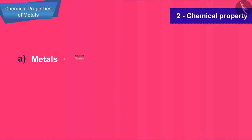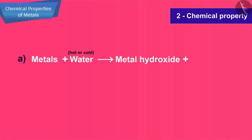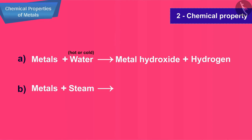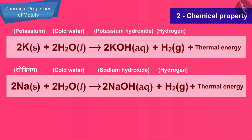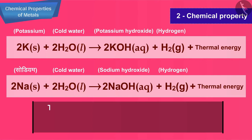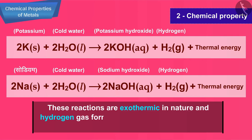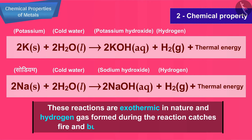When a metal reacts with water, hot or cold, then the products formed are metal hydroxide and hydrogen gas. When a metal reacts with steam, then the products are metal oxide and hydrogen gas. Potassium and sodium react vigorously with cold water, and these reactions are exothermic in nature. The hydrogen gas formed during the reaction catches fire and burns, causing little explosions.